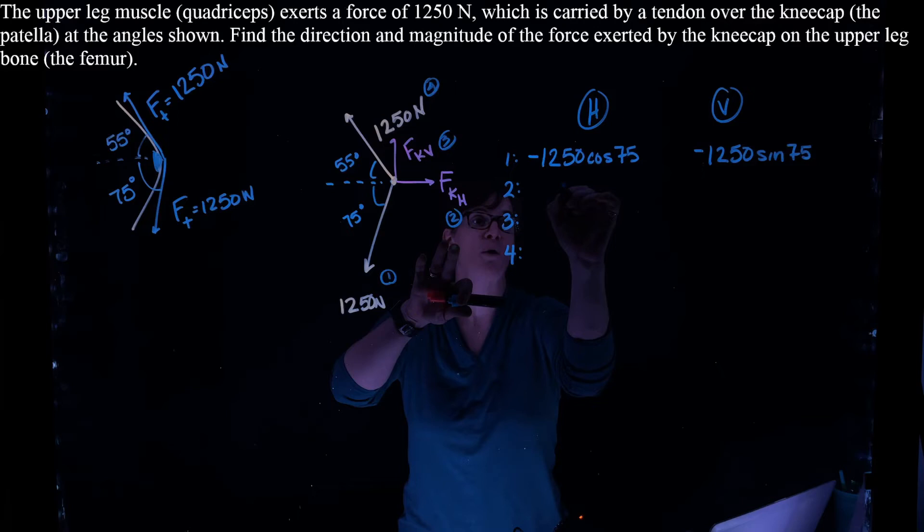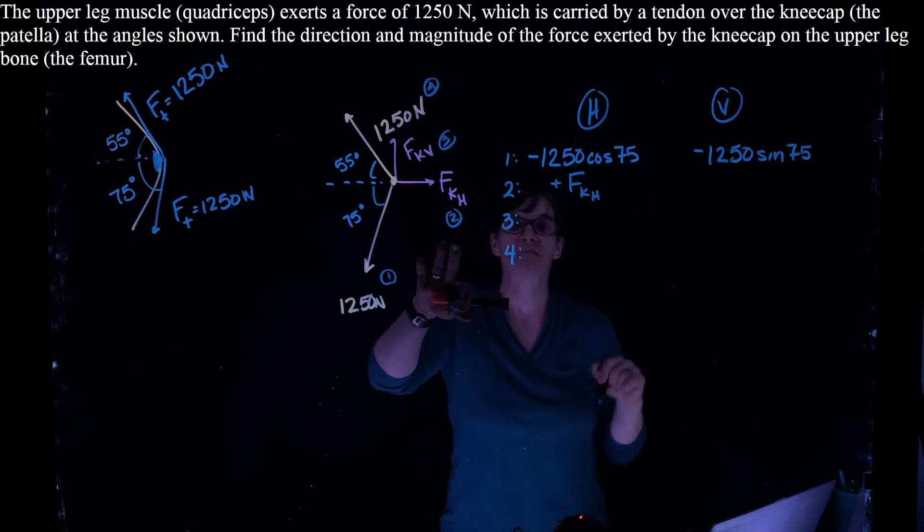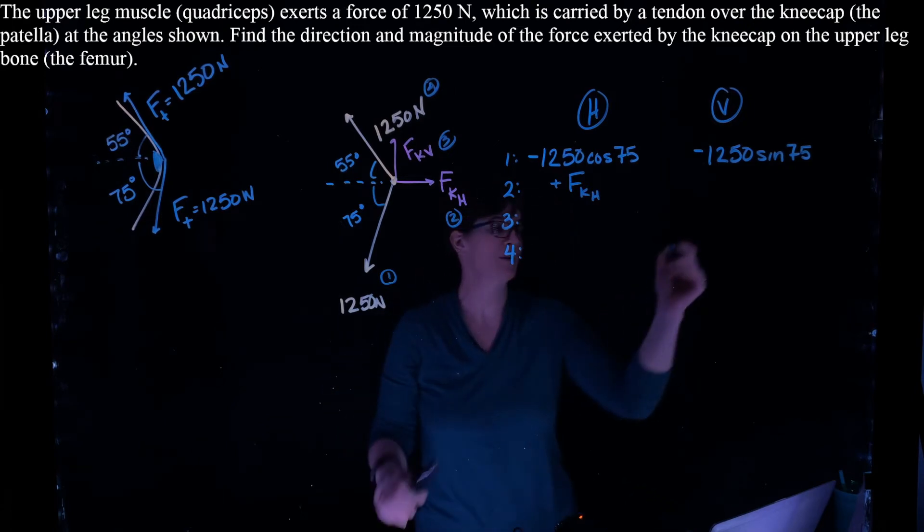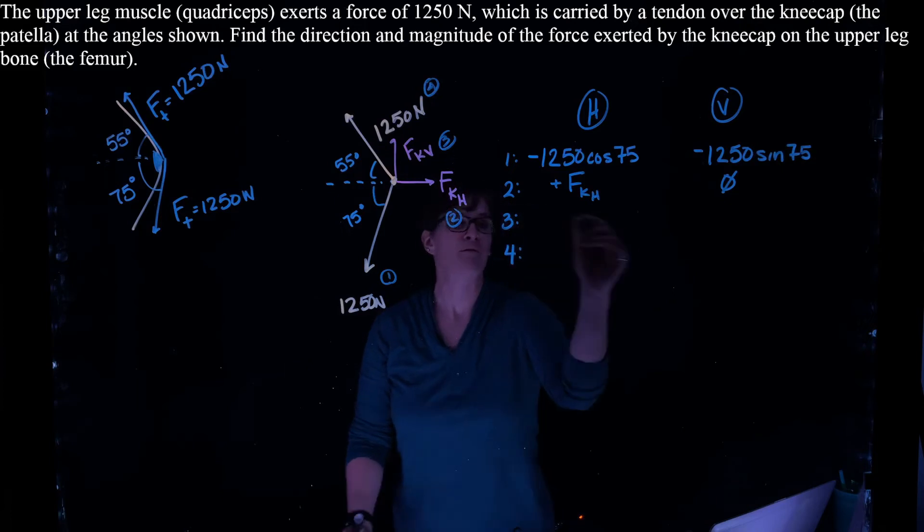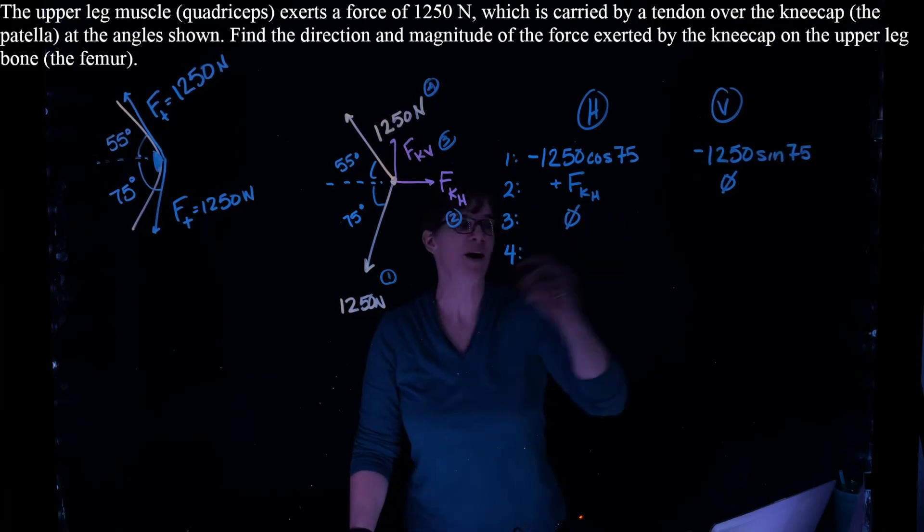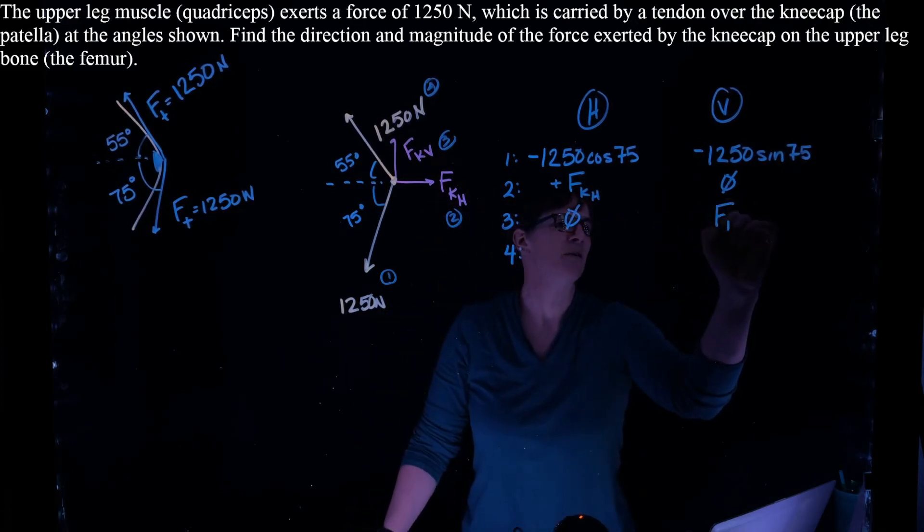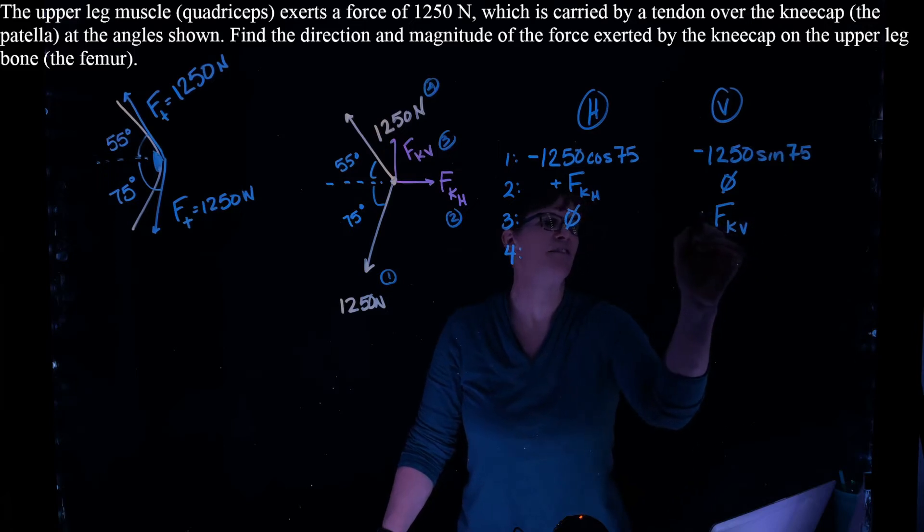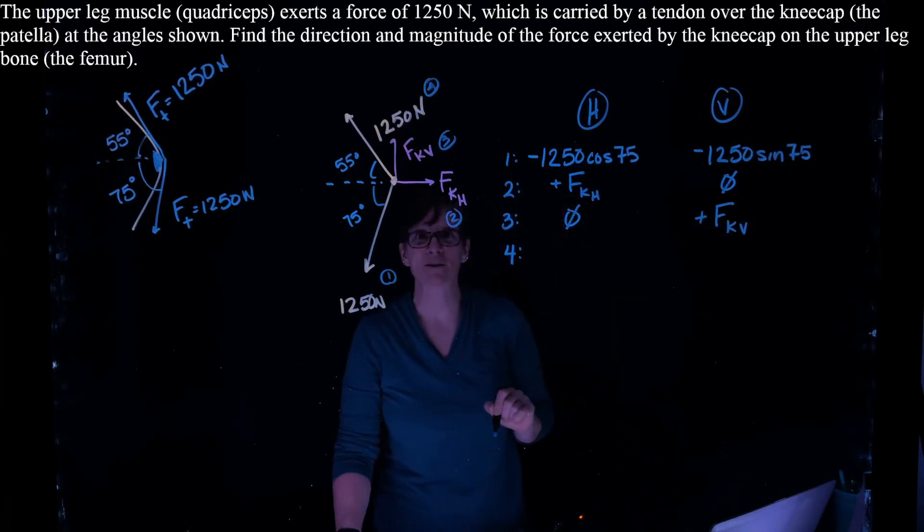All right. Force number 2. Well, there's only a horizontal component of the knee in force number 2. And I defined it as pointing to the right. No vertical component. Force number 3 is my vertical component of the knee. So that is in the vertical direction. Nothing horizontal. And I designated it as up.